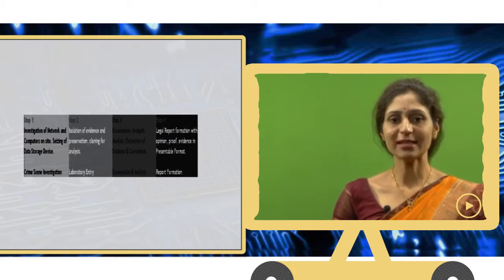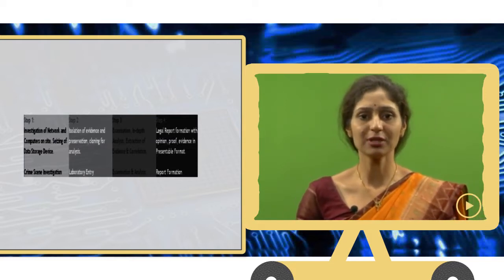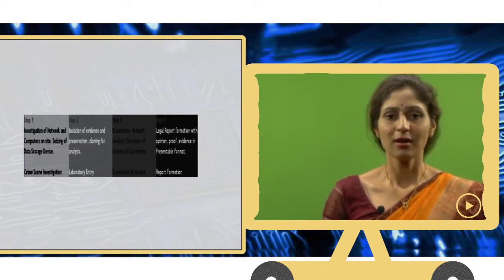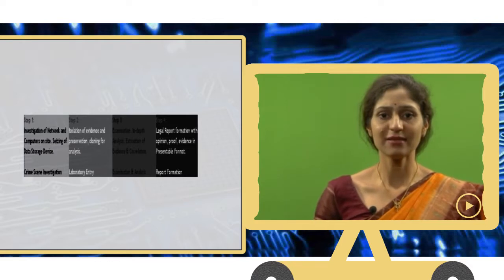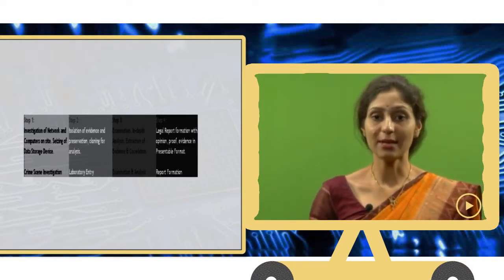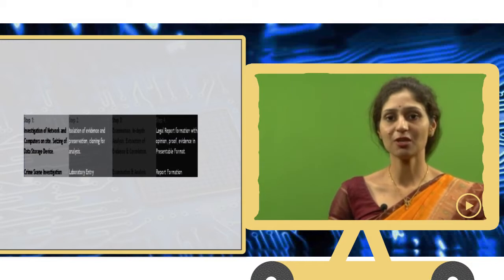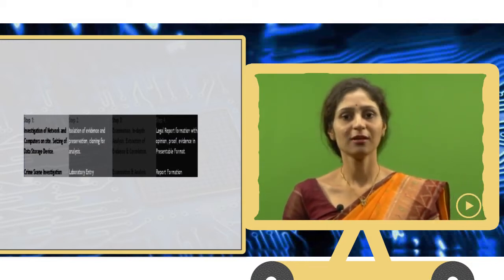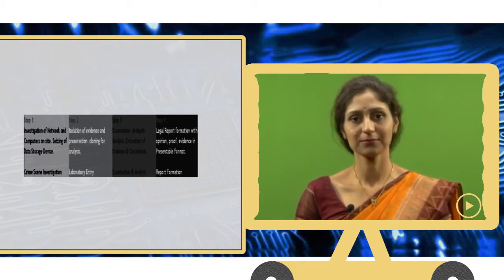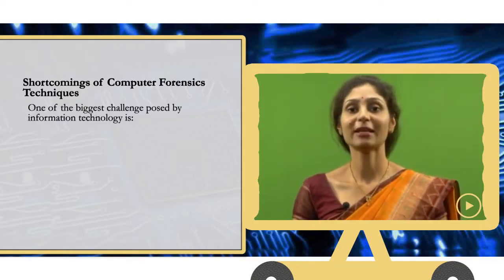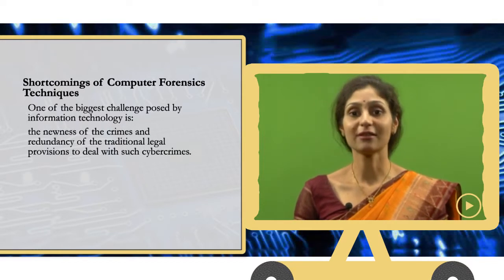Step 1, investigation of network and computers on seizing of the data storage device. Step 2, this is isolation of evidence, preservation and cloning or making images. Step 3, which is followed by step 3, the examination, the in-depth examination of data and finally, making of the legal report to be produced in the court. After having discussed all these stages in detail, there are many shortcomings involved in the procedure of computer forensic techniques. One of the biggest challenge posed by the information technology is the newness of the crime and the redundancy of the traditional legal provisions to deal with such cyber crimes.